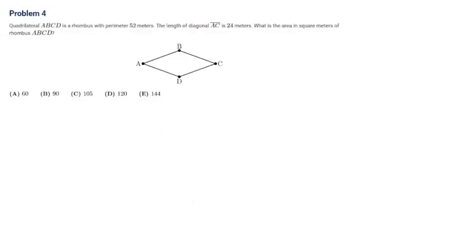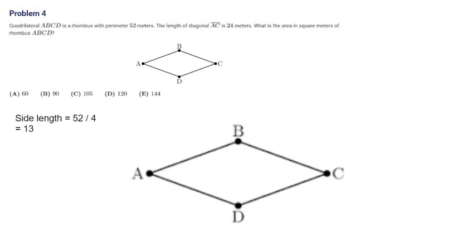Quadrilateral ABCD is a rhombus with a perimeter of 52 meters. The length of diagonal AC is 24 meters. What is the area in square meters of rhombus ABCD? So as we have a diagram here, let's enlarge that. And first, we know that the perimeter is 52 meters. So in order to find one side, we know that the rhombus has four equal sides. So 52 divided by 4 is just 13.